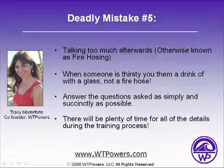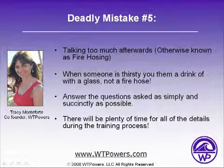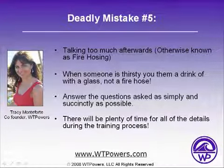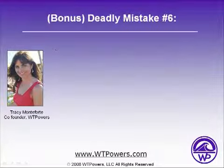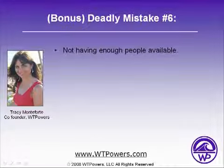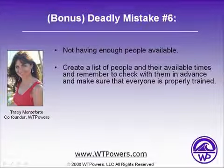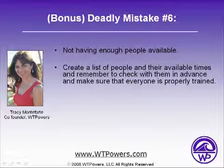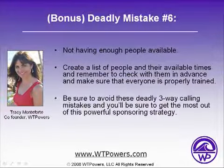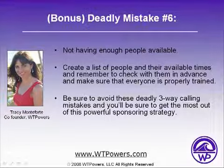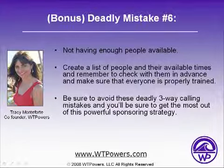So deadly mistake number five: do not talk too much after the call. Your expert person should have done everything for you, and you're ready to go. Now I'm going to give you a bonus mistake. Deadly mistake number six is not having enough people available in your three-way calling network. So create a list of all the people that are available — you can use your upline, your downline, and your sideline. Get times that those people are available, be sure to check with them in advance, and make sure that everyone is properly trained on doing three-way calls.